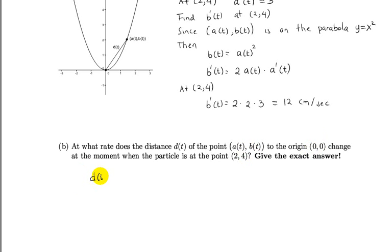D(t) is equal to the distance between (a(t), b(t)) to (0,0). By the distance formula, we have √(a(t)² + b(t)²). We can square both sides to make the derivative easier.